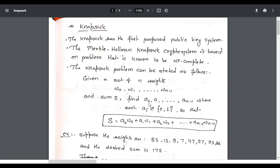Where ai belongs to {0,1}, means ai is a binary number, it can be 0 or 1, so that S equals a0*w0 plus a1*w1 plus a2*w2 and so on.